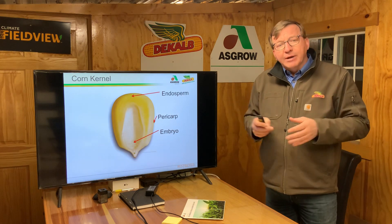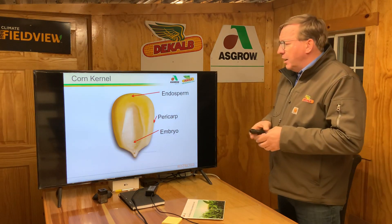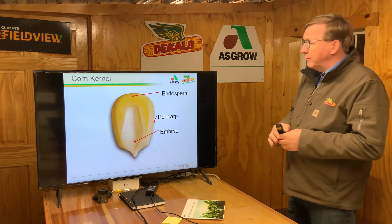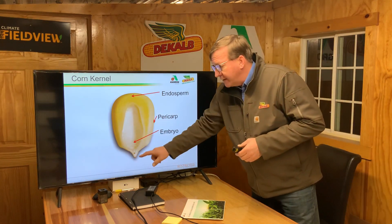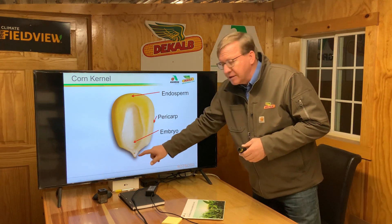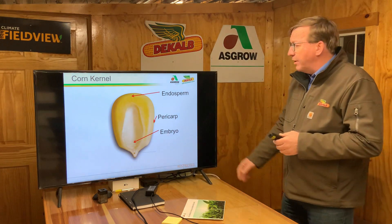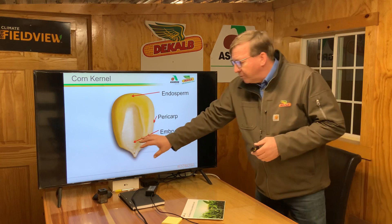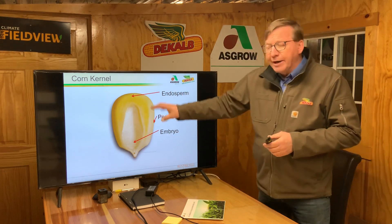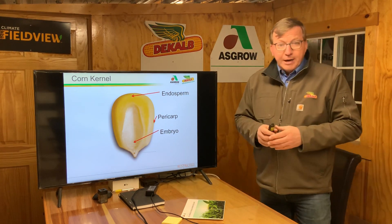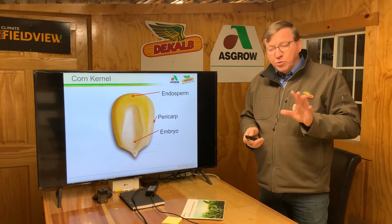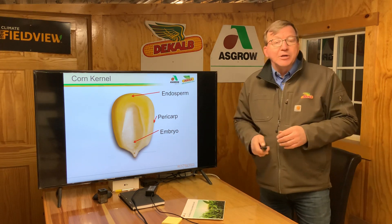Let's take a minute and just look at the seed here. A corn plant is an amazing manufacturing plant that really has the embryo right down here. This is the thing that we want to protect, and to do that we have the pericarp and the endosperm really not only protecting that embryo, but giving it energy to really get going until its roots can actually develop. So this is a precious piece we want to take good care of as we go forward.